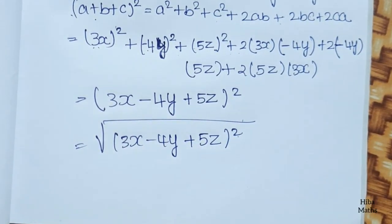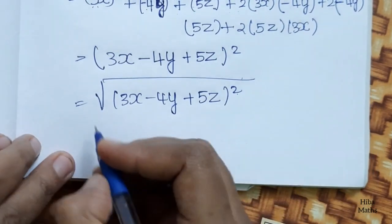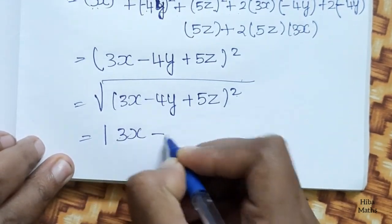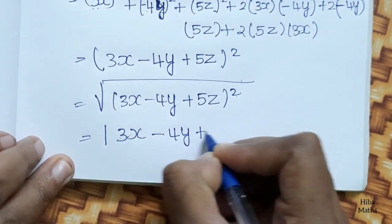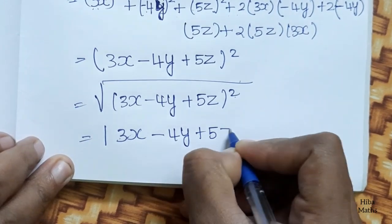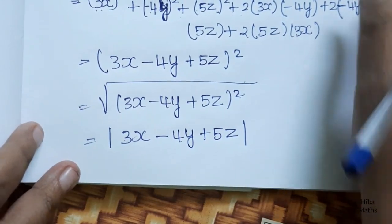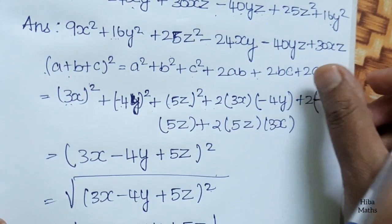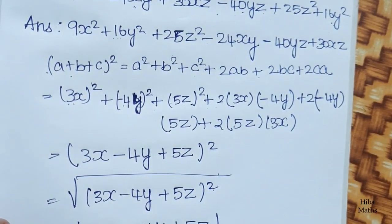The square root of (3x minus 4y plus 5z) whole square — the square root and square cancel. So the answer is the modulus of (3x minus 4y plus 5z). It's very easy using this formula. You can compare and solve the third subdivision.